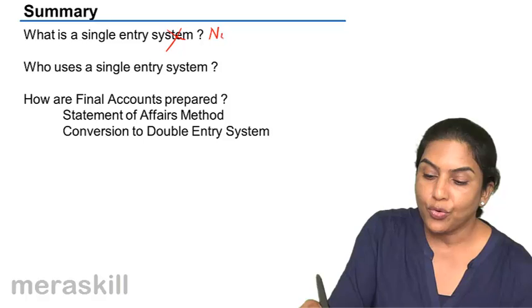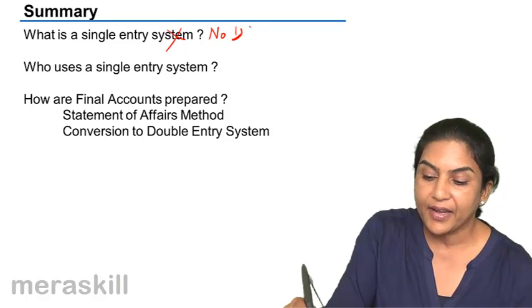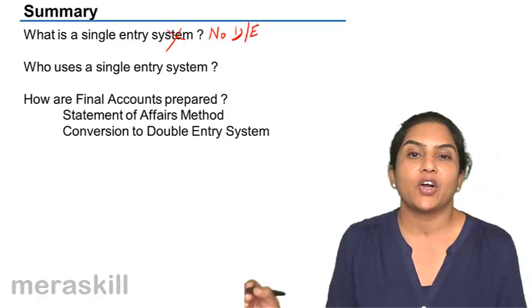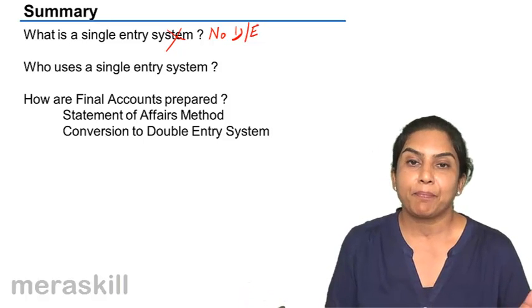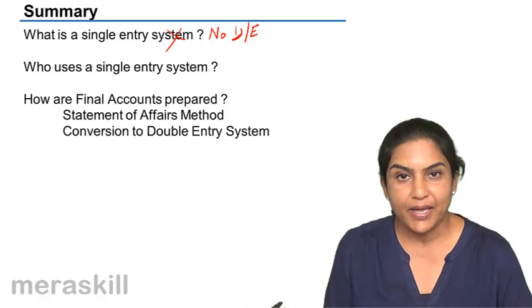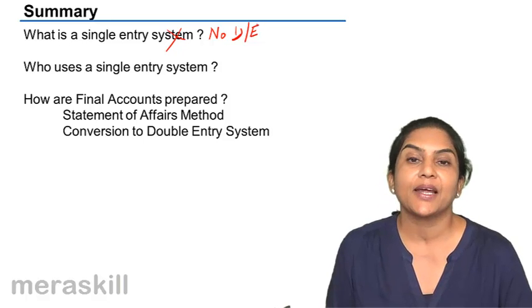When a single entry, no double entry, if double entry is not followed, then we call it a single entry. There is no system. Some books may be kept in any manner. It is incomplete record keeping.